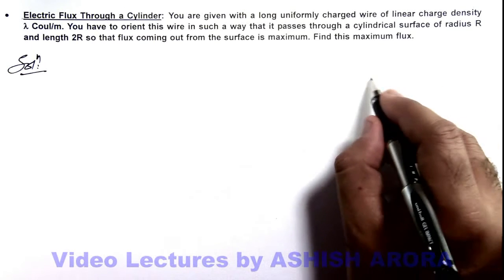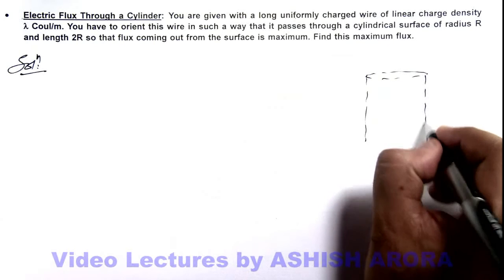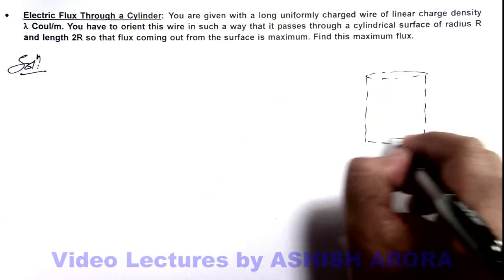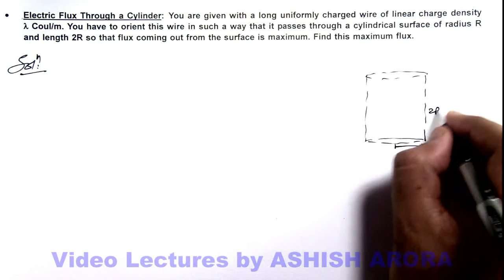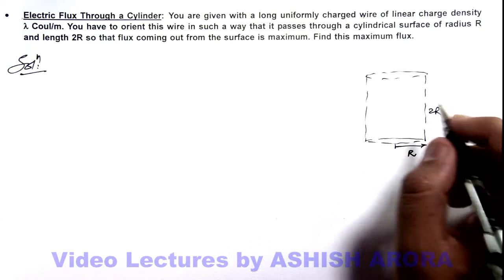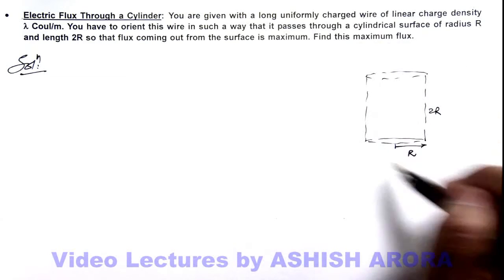So the situation is quite simple. We are given a cylindrical surface, and this surface is of radius R and its length is 2R. And a long uniformly charged straight wire we need to orient such that the flux through the surface is maximum.